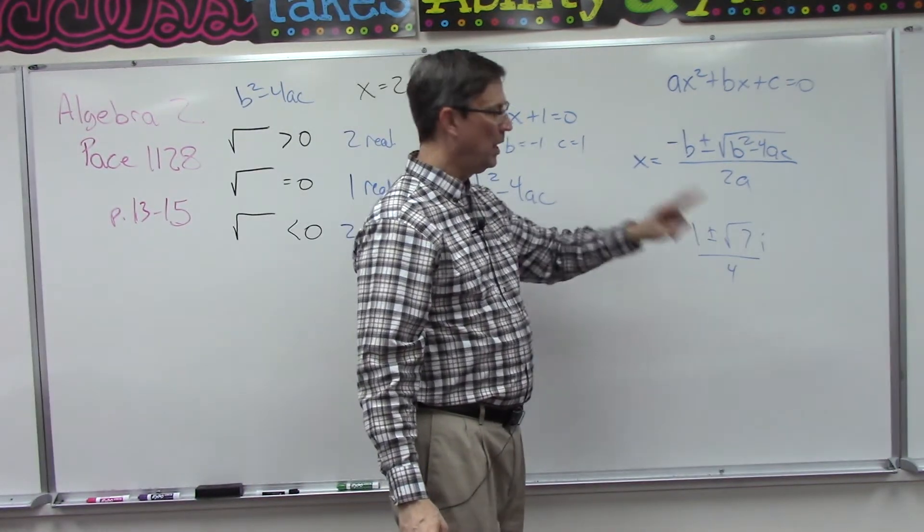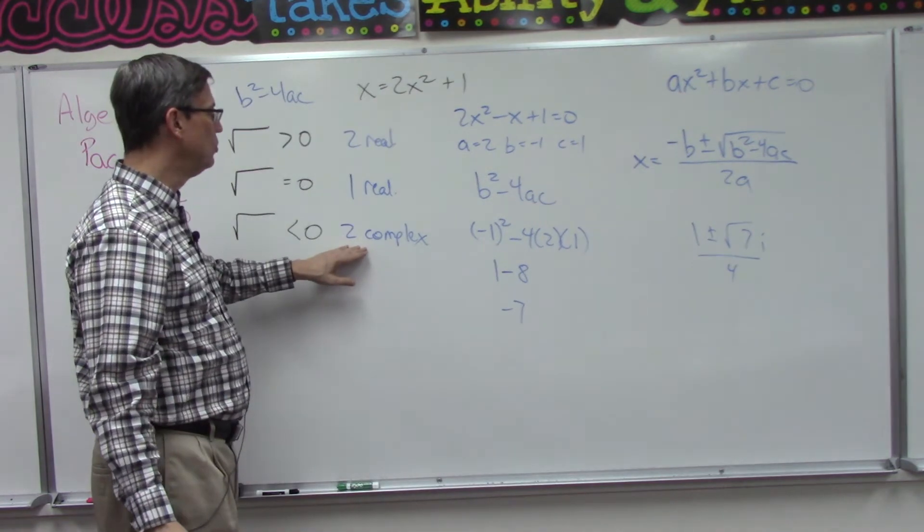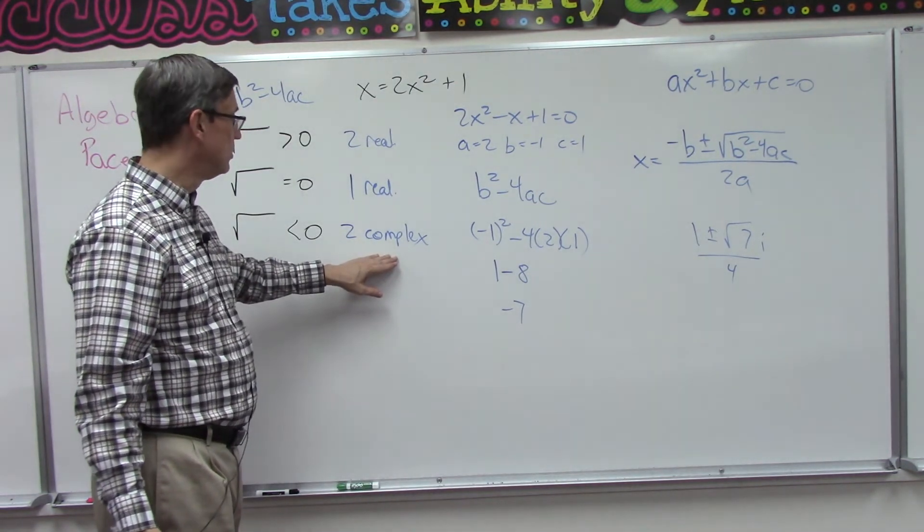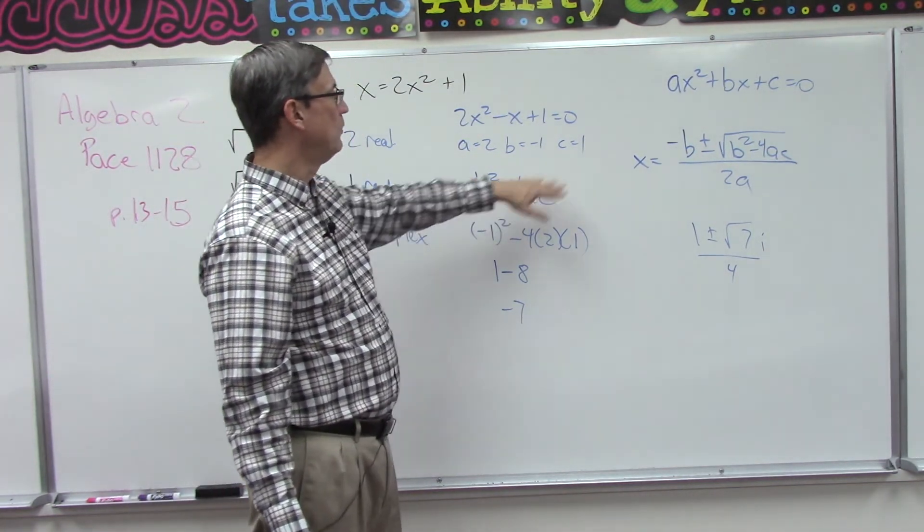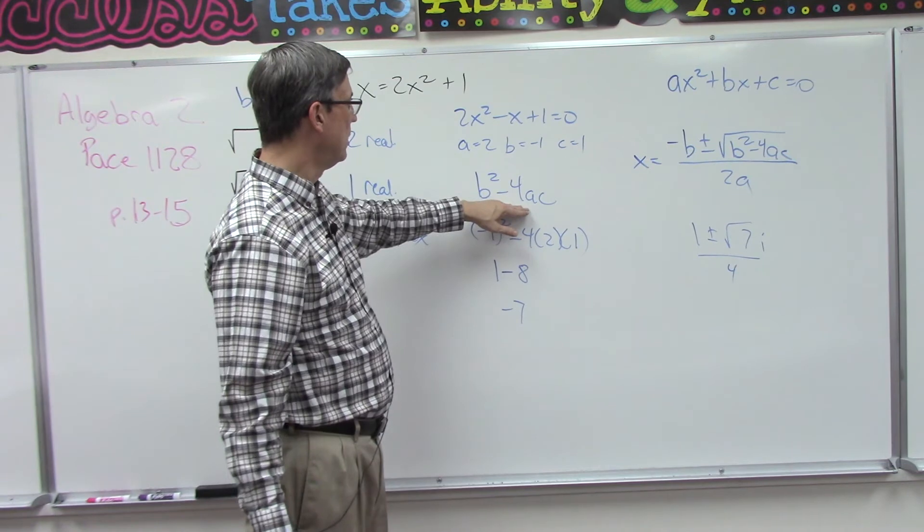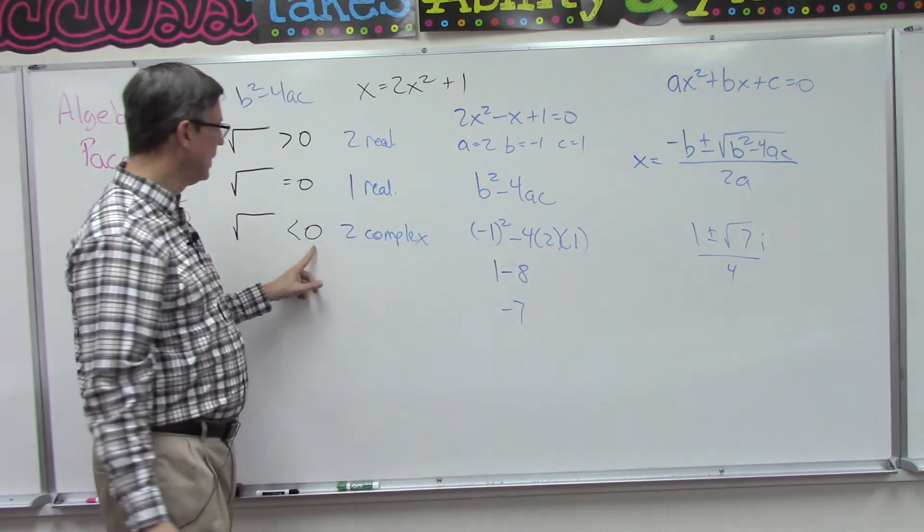Then because of the plus and minus, I have two answers. So we have two complex answers. And all we had to do was solve this part of it. We didn't really have to do the whole thing, just this part. And boom, we got a negative number. If we have a negative number, something less than zero, then we know we have two complex solutions.